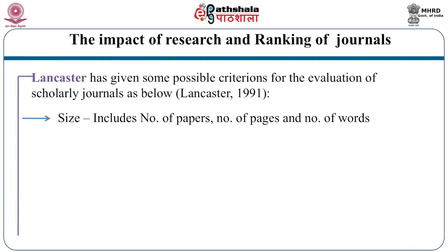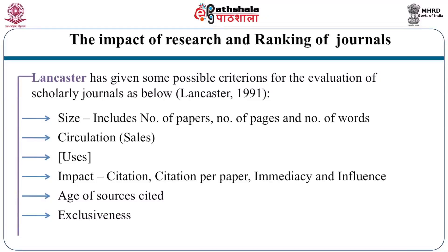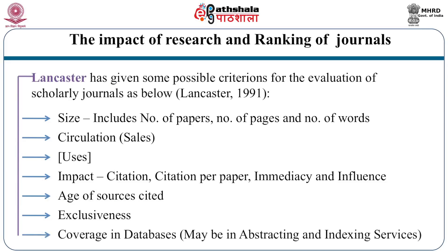Lancaster has given some possible criteria for the evaluation of scholarly journals: size includes number of papers, number of pages and number of words; circulation refers to how much the population makes use of a particular journal; impact in the sense of citations per paper, immediacy and influence on cited literature; age of sources cited, meaning how old the cited article is; and exclusiveness, meaning how exclusively the citation, article or journal has been covered. Coverage in databases such as abstracting and indexing services journals is also a criterion.